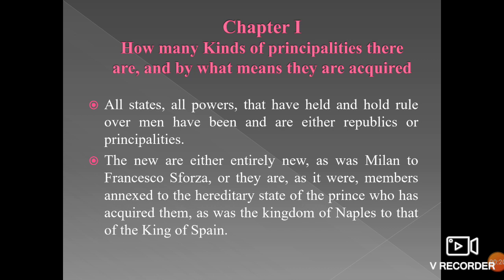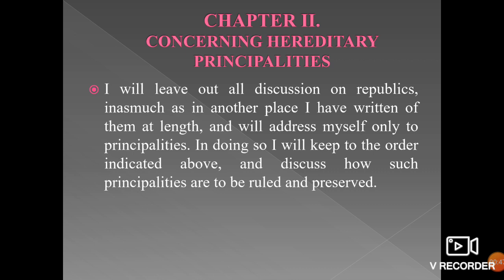We begin with chapters 1 and 2, taken together because both are very small. Machiavelli discusses two types of states: republics and principalities. He declares he will not discuss republics, examining only how principalities may be acquired and governed. Principalities are either inherited or new; new principalities are either annexed to a ruler's existing territory or completely new, and are either ruled by a prince or used to being free, acquired by luck or by strength.